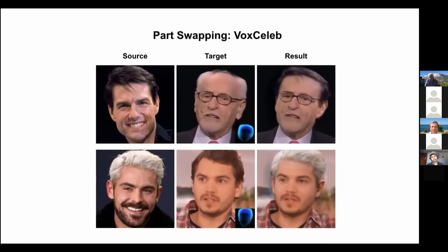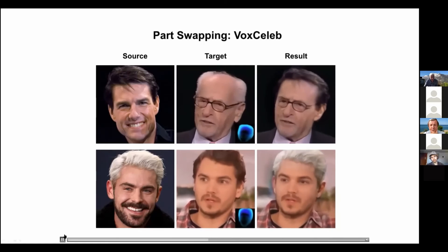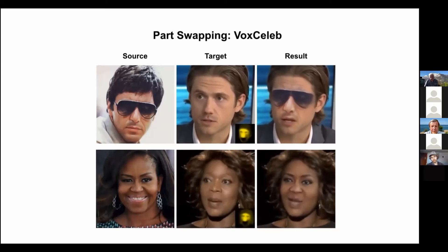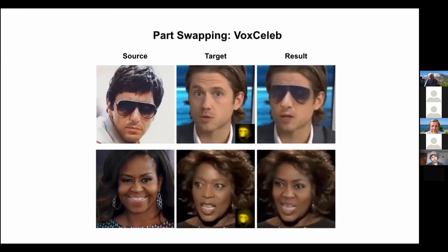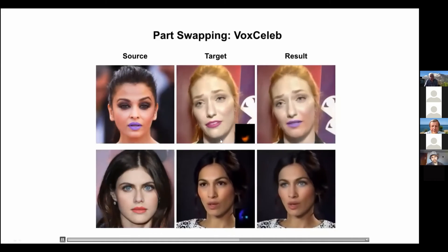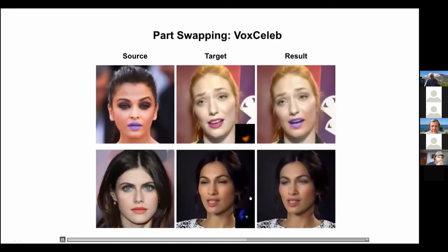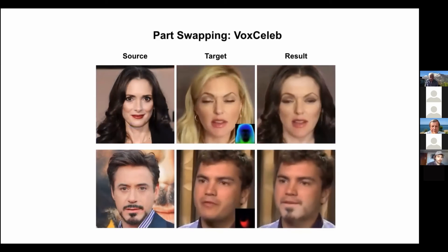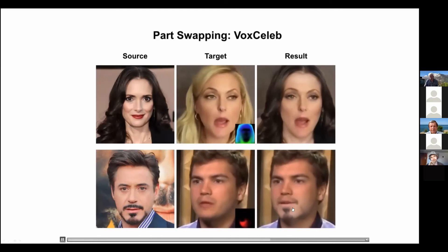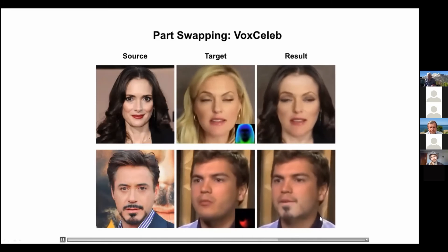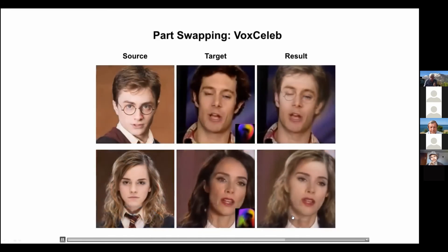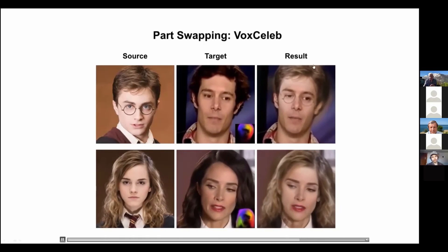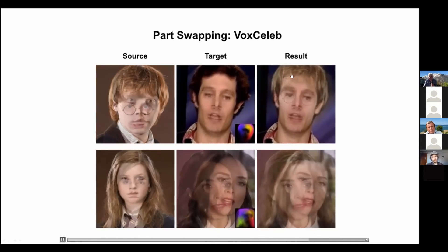There are still some small problems with the background, but it works reasonably well. Other examples include taking glasses, the nose, eyes — different facial features from a source and placing them on a target. We can take lips, and blue eyes from the source appear on the target. You can take the hair, the area around the mouth with a beard, or even something like Harry Potter's glasses, combined with different hair — all using appearance and motion information together to do animation and face modification.